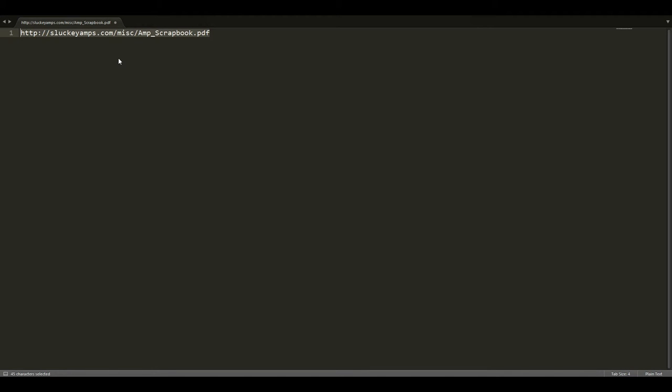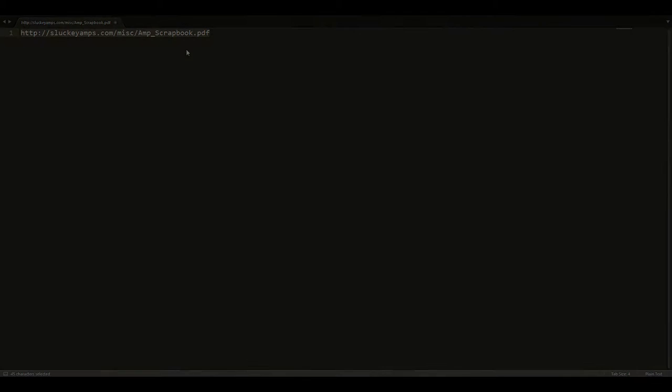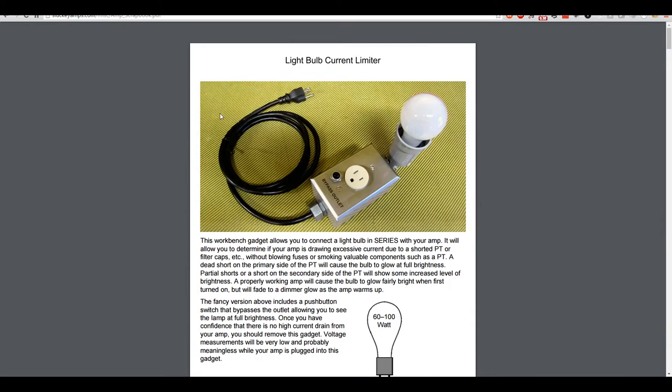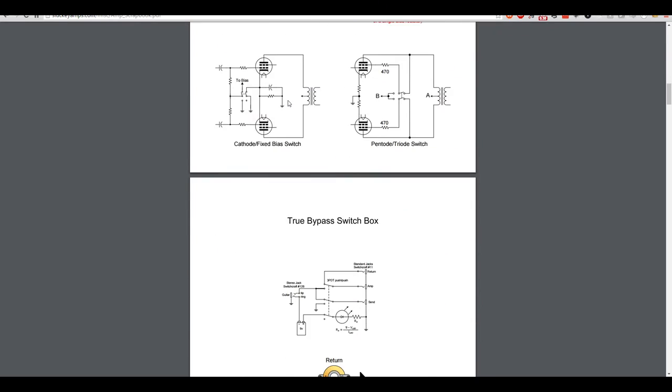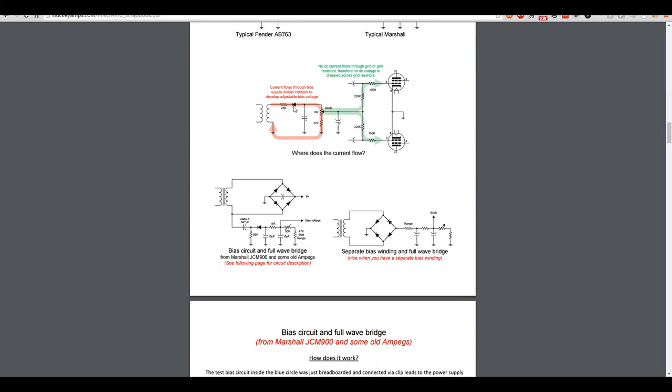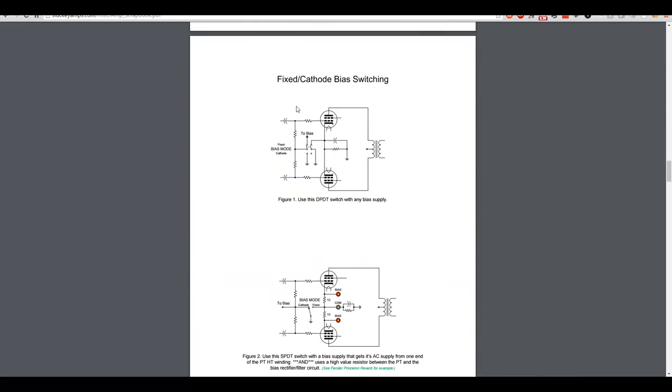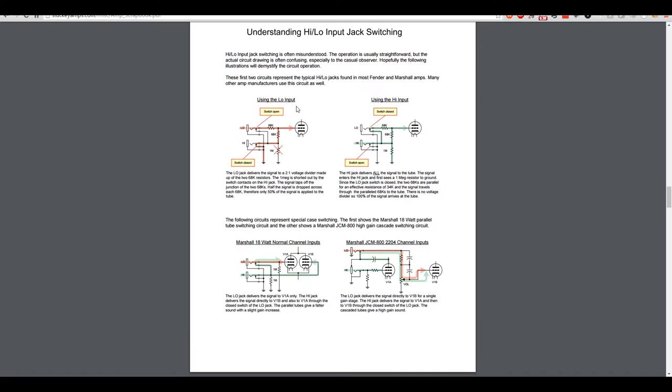But he goes over, he has an amp scrapbook with a lot of cool things, but the one that I wanted to cover again was the inputs, because there's a part of it he mentioned that I didn't get very well, and his covers it pretty well. So here's this amp scrapbook, and he has a lot of cool stuff on this page. This is the light bulb current limiter, but what I want to show is he has a nice way of understanding here, it's high-low input jack switching.